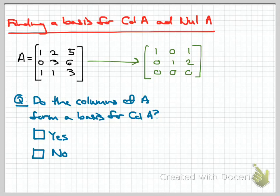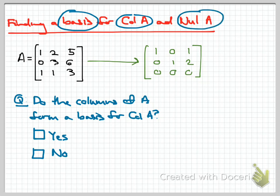Welcome to this video on how to find a basis for the column space and null space of a matrix. Let's first re-familiarize ourselves with the terminology. A basis for a subspace is a set of vectors that is both linearly independent and which spans the entire subspace. The column space of a matrix A is the space spanned by its columns, and the null space of A is the set of all solutions to Ax equals the zero vector. The column space and null space are indeed subspaces, and now we're going to find a basis for each.